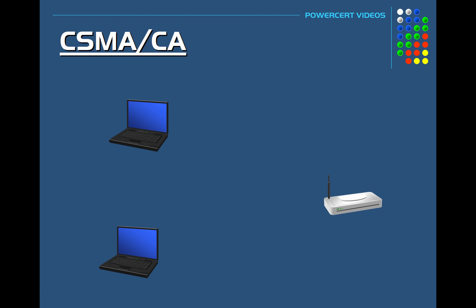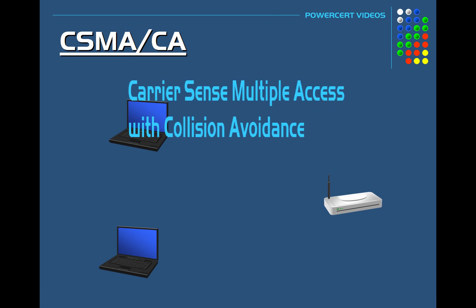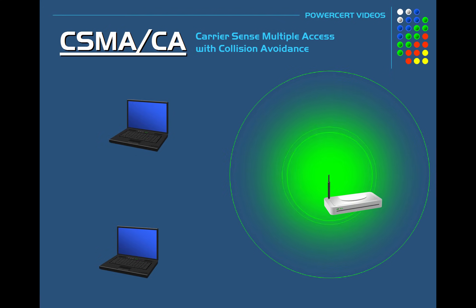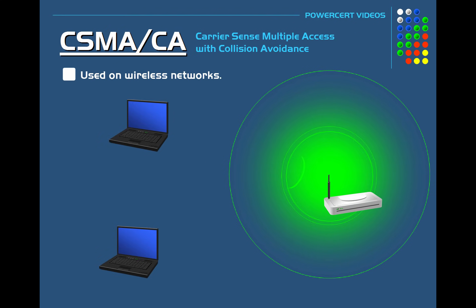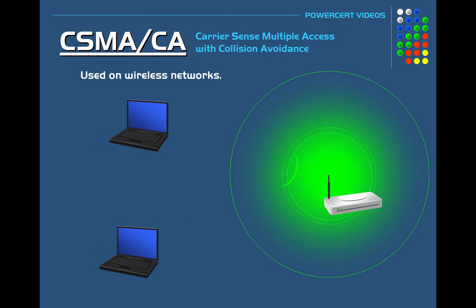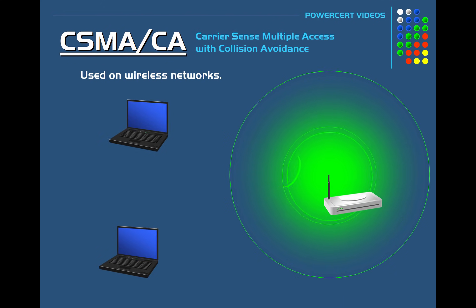There is also CSMA-CA, which stands for Carrier Sense Multiple Access with Collision Avoidance. This is the access method used for carrier transmission in wireless networks, because just like wired networks, wireless networks need to avoid collisions as well.